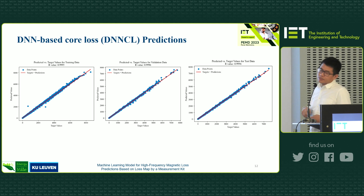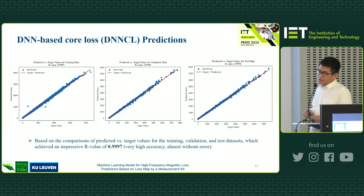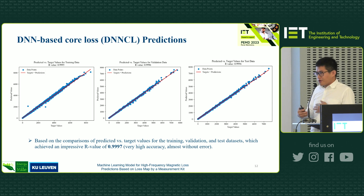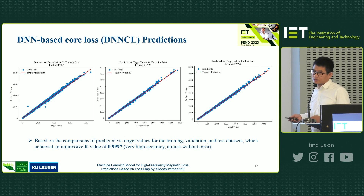Here is more proof: these are the three datasets of training data, validation data, and test data. The correlation coefficient is almost one, meaning that your predicted data is really close to your targeted data — compared to the same Steinmetz predictions.